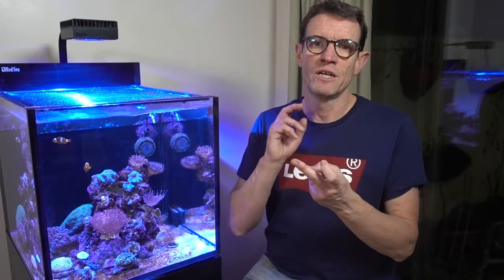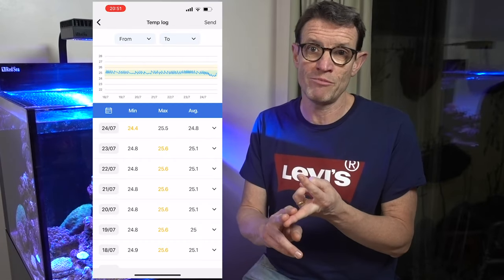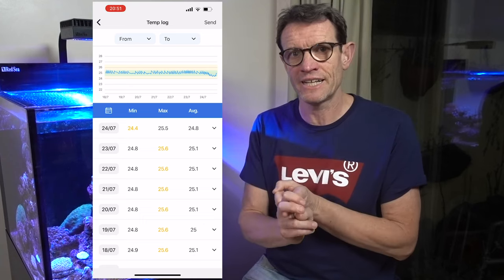Because not only can it be used as an auto top off, it also gives you an alert if your reservoir is too low and also comes with two added things. Number one, it will monitor your temperature. So if you're out and about and the temperature drops or the temperature peaks, you will get a notification. And secondly, it has a leak detector on it and that has triggered for me once when my skimmer overflowed.